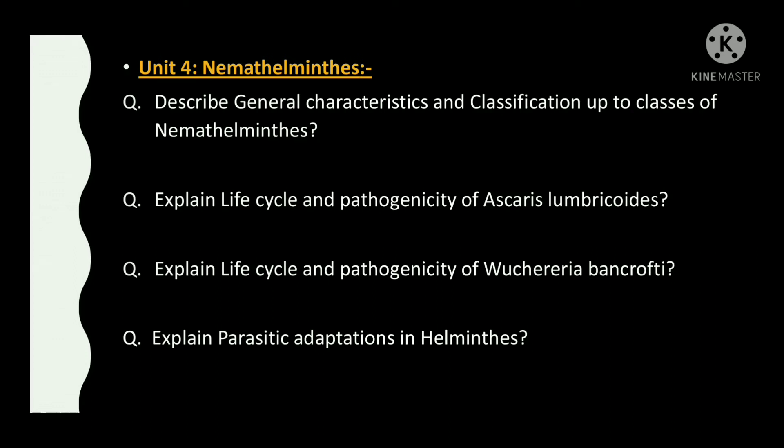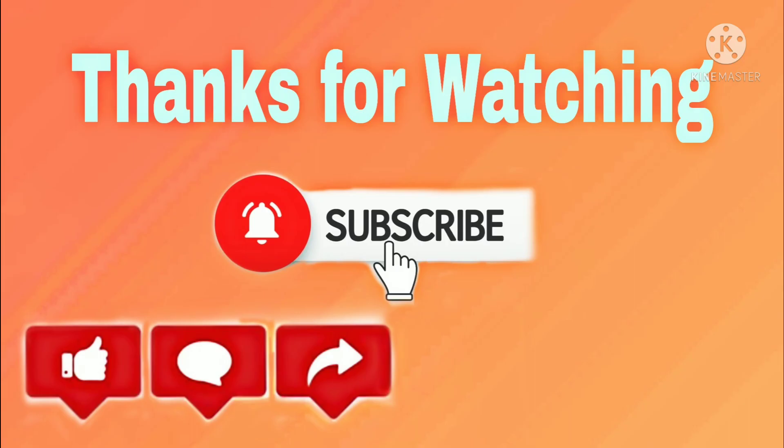Unit 4: Nematelminthes. Questions from this chapter are: describe general characteristics and classification up to classes of Nematelminthes. Then explain the life cycle and pathogenicity of Ascaris lumbricoides. Then explain the life cycle and pathogenicity of Wuchereria bancrofti. And the last one is: explain parasitic adaptations in helminths.